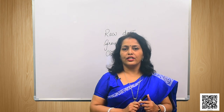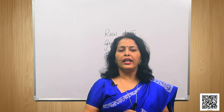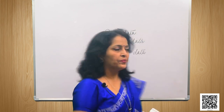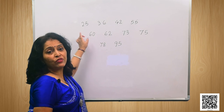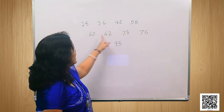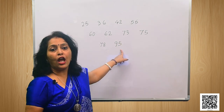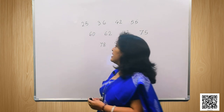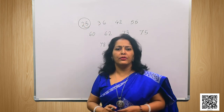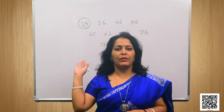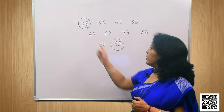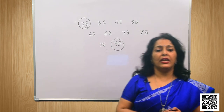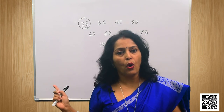To make the data useful, we write the numbers in ascending order. The numbers arranged are: 25, 36, 42, 55, 60, 62, 73, 75, 78, and 95. Now we can easily find that the lowest mark is 25 and the highest is 95. This gives correct information about the class and is called raw data.